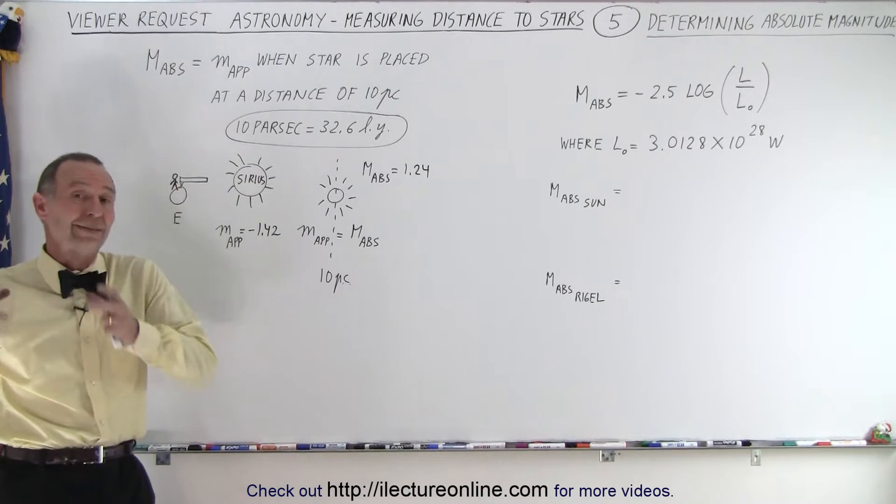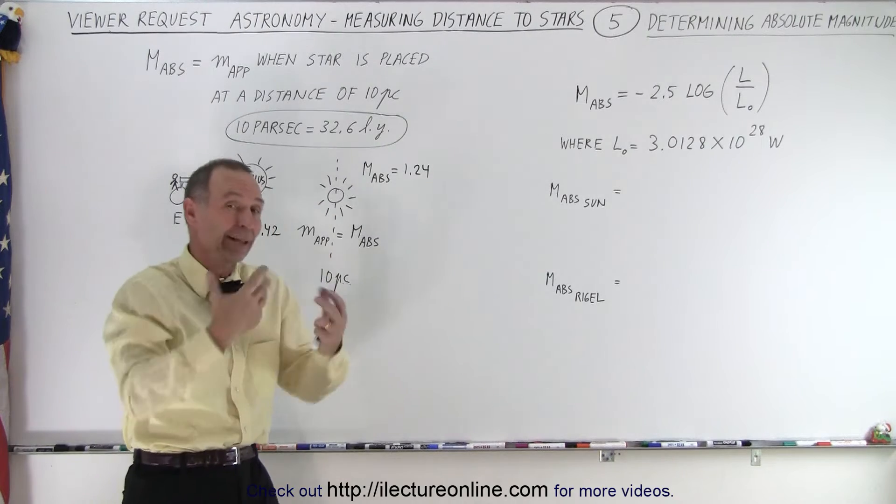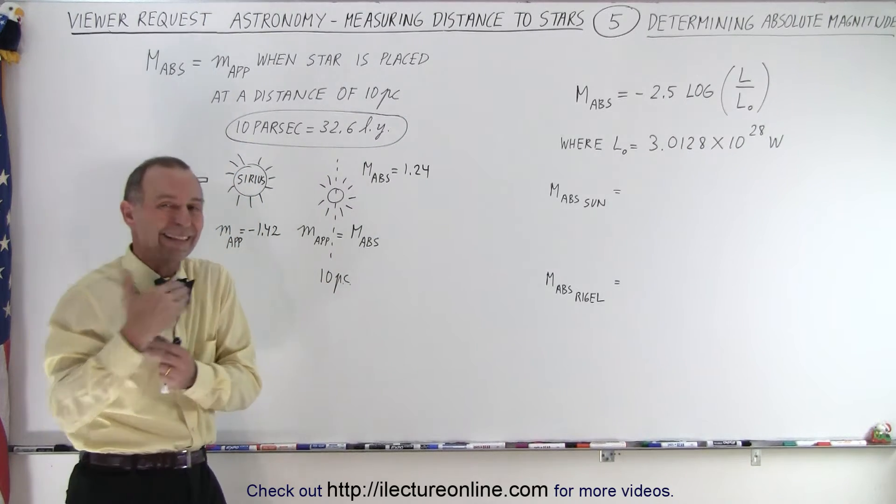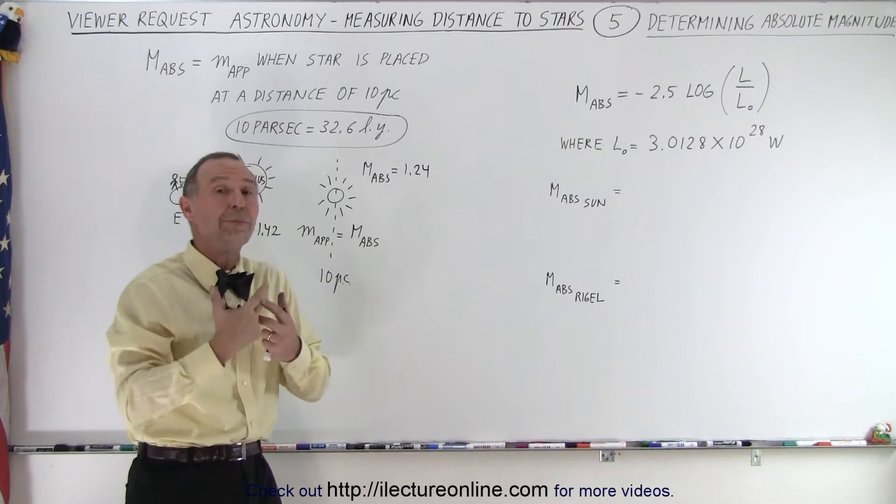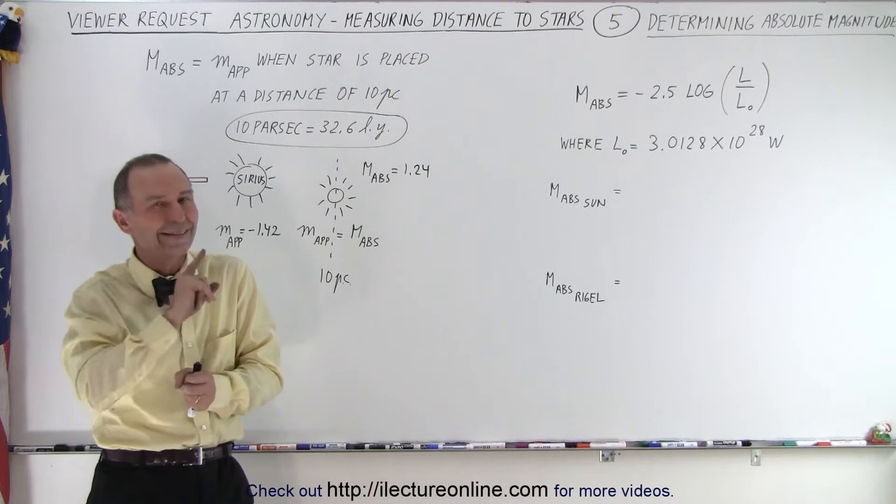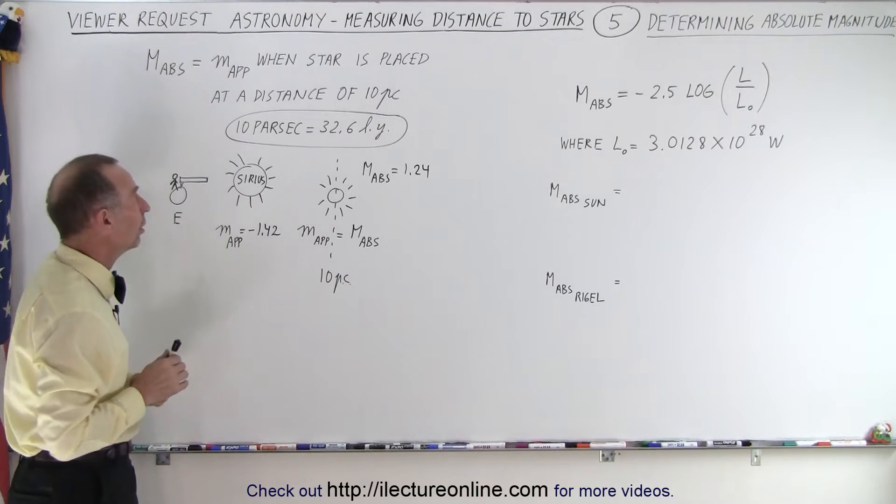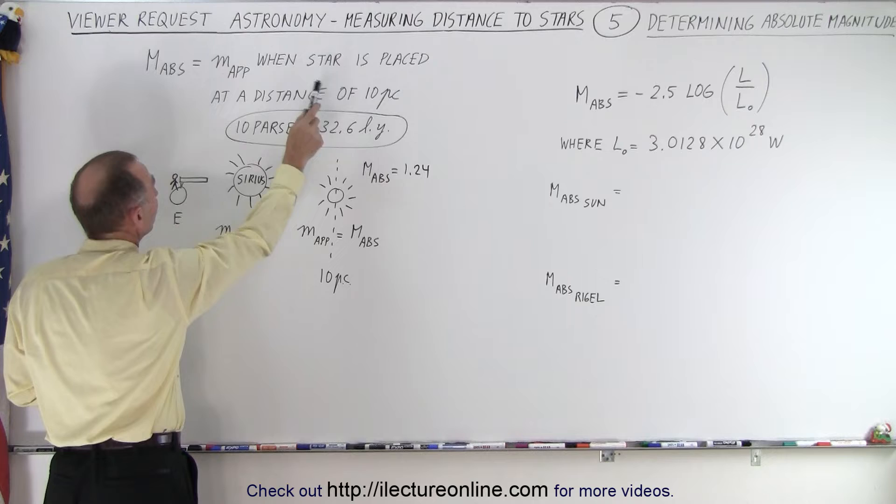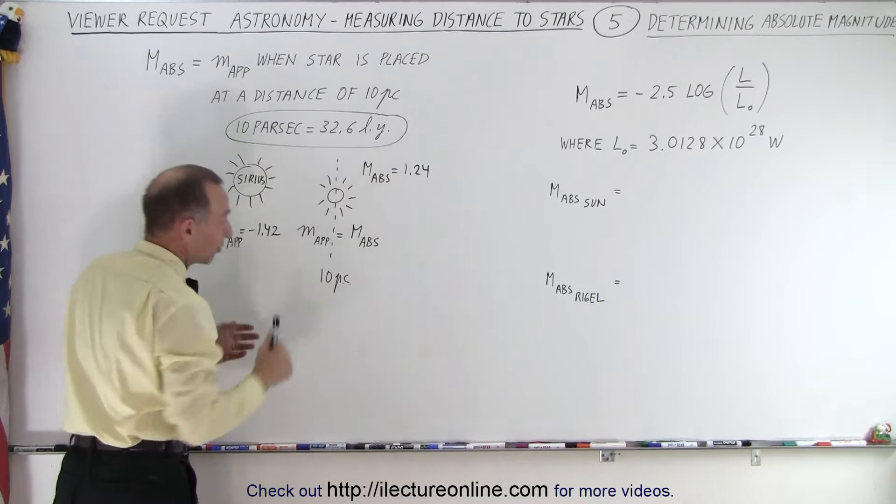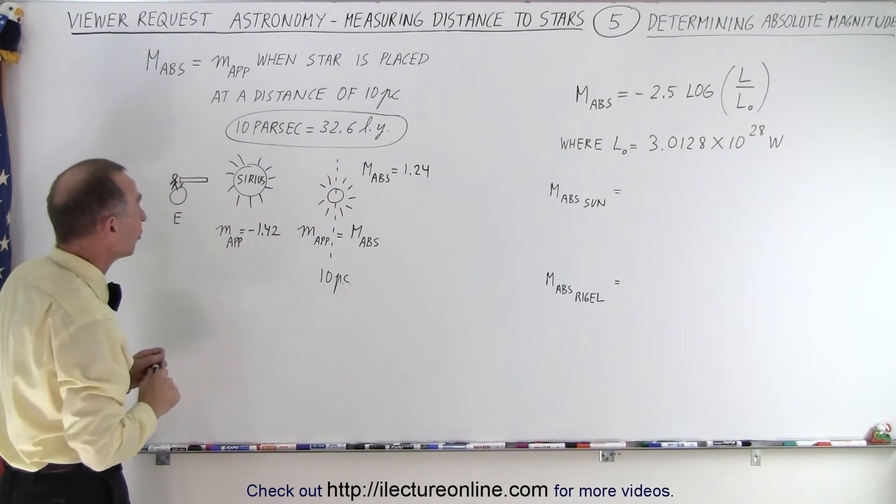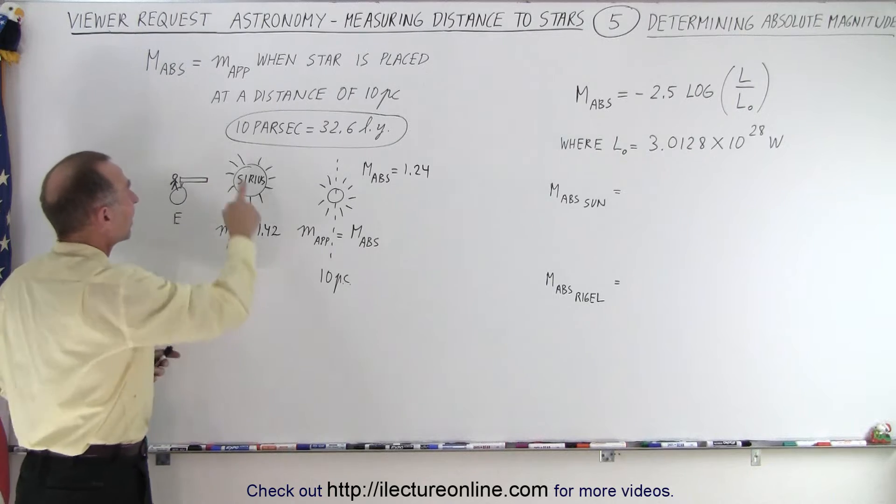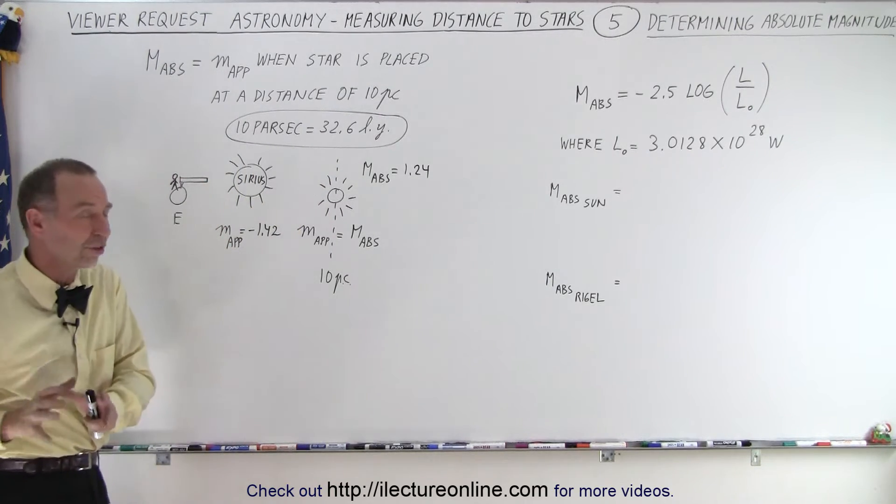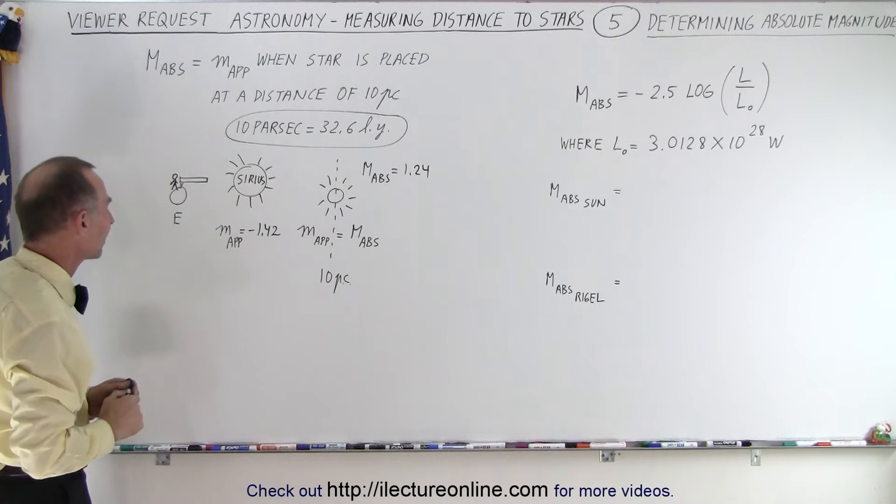Now, of course, we can't physically take a star and move it to that distance and then measure it, but it's imagined. If the star was at 10 parsecs away, what would be the apparent magnitude? And whatever that number is, that is the absolute magnitude of the star. So essentially, it's the measurement of the apparent magnitude when the star is placed at a distance of 10 parsecs, realizing that 10 parsec is equal to 32.6 light years because it's 3.26 light years for a parsec.